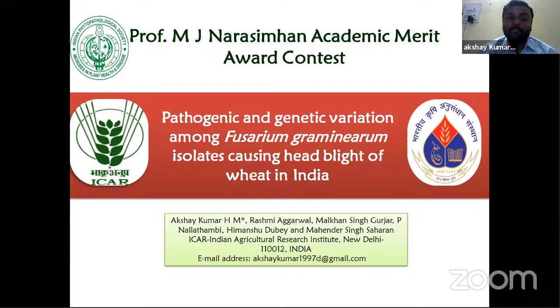This presentation is on pathogenic and genetic variation among Fusarium graminearum isolates causing head blight of wheat in India. Head scab caused by Fusarium graminearum is currently considered a minor disease but is occurring regularly in severe form in areas of Punjab, Nilgiris, and Lahaul-Spiti Valley, making it a potential future risk to wheat production in India.